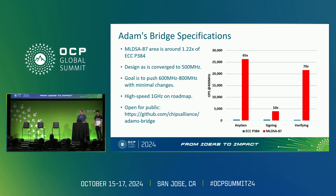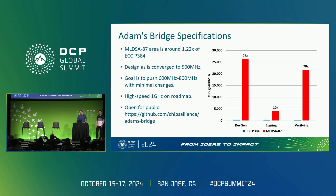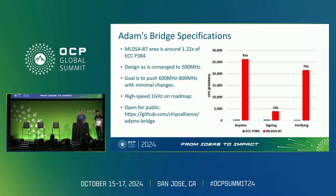For key generation and verification, it shows even better performance. The current design runs at 500 MHz, and we believe we can push it to 600 to 800 MHz with minimal changes. For the high-speed design, our goal is to push to 1 GHz. The entire implementation is open source and published, so you can go to the repo mentioned in this slide and use the RTL.